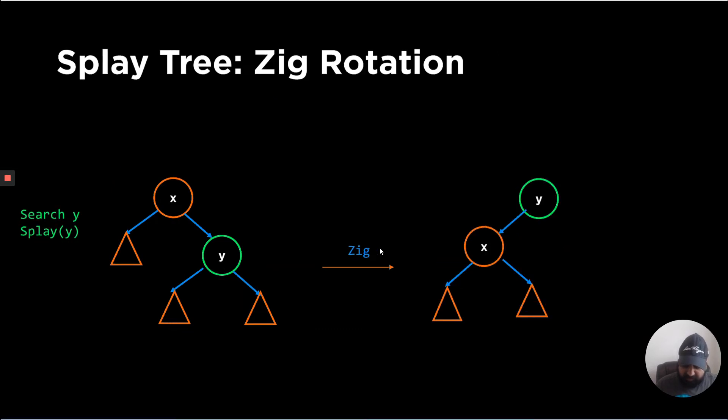The third type of rotation is zig rotation. So in zig rotation, what happens is you just have two nodes, which is Y is a child of X. Now when you search Y, you make Y the new root and X the left subchild of Y.